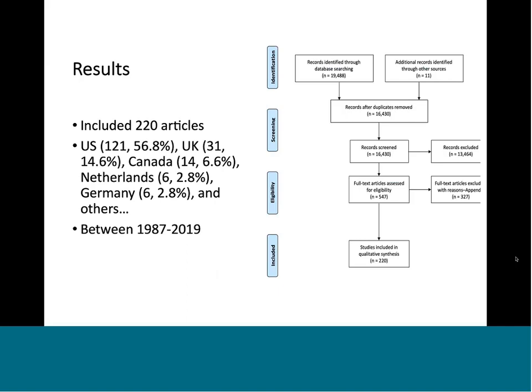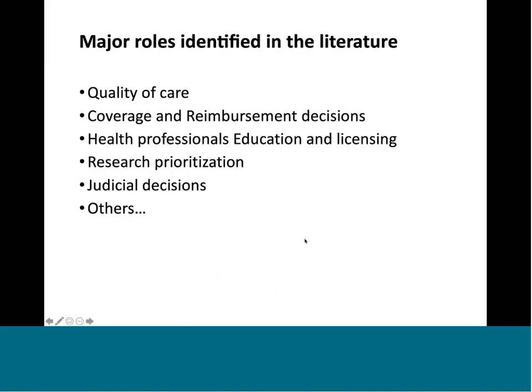The major roles we identified in the literature can be summarized as: quality of care, coverage and reimbursement decisions, health professionals' education and licensing, research prioritization, and judicial decisions. There are other roles that are not very well developed or reported in the literature that I will go through briefly — they don't have too much evidence or too many papers discussing them.